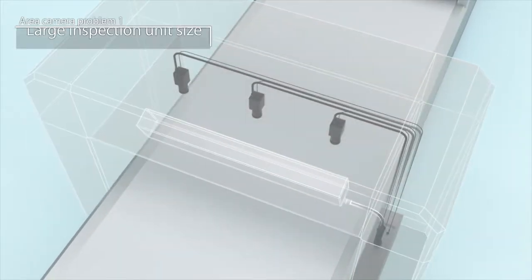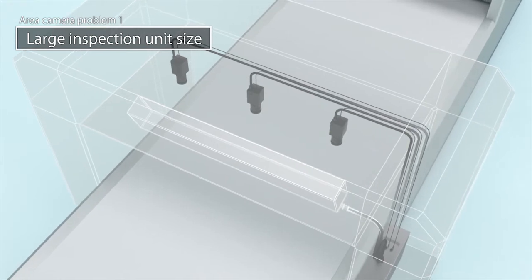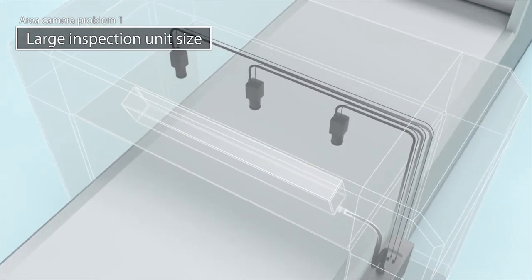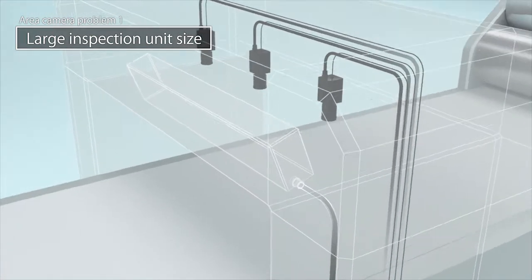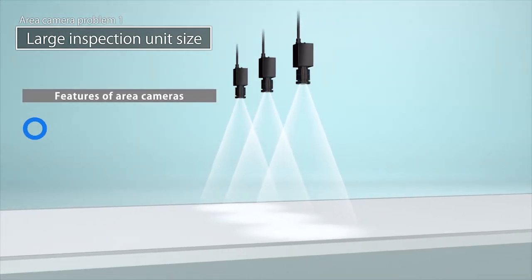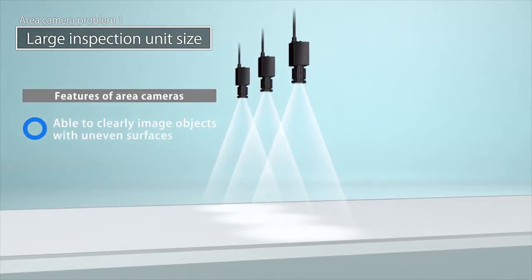The devices most commonly used for AOI inspections are area cameras. Area cameras have a deep focal length, which enables them to clearly image objects with uneven surfaces.